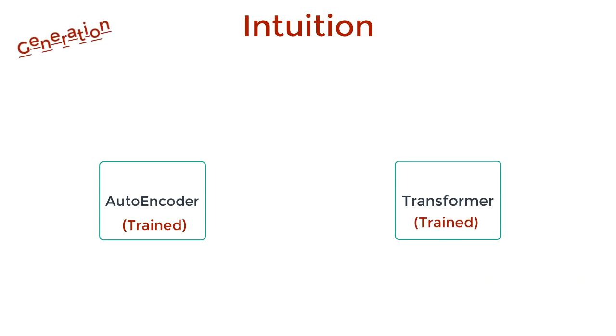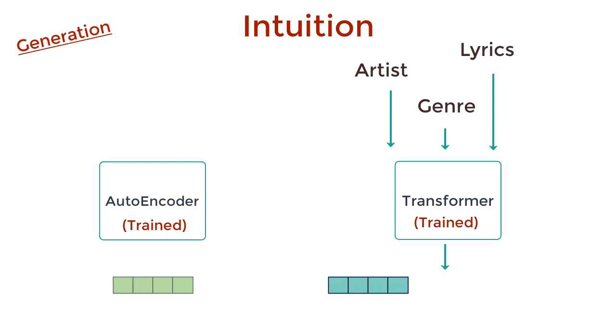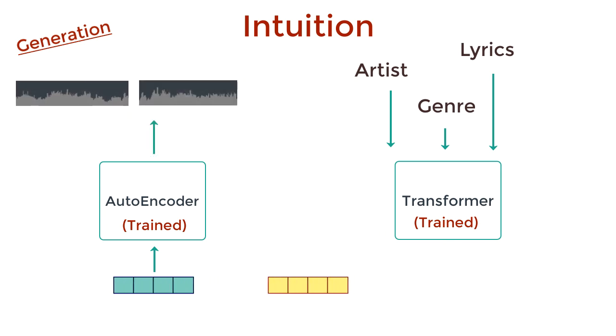During the generation phase, we use both of them together. Pass in the lyrics, genre, and artist to the transformer, and have it generate the compressed vector, one audio chunk at a time. And we can pass each of these compressed vectors through the autoencoder to get back the raw audio waveforms. Stitch them together and we have the generated song.